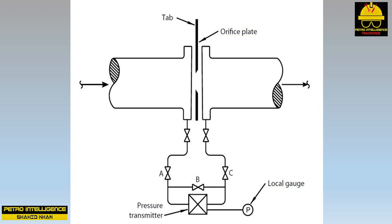Look at the tab sticking out of the orifice flanges. If the orifice plate is installed in the correct direction, there will be a number stamped onto the tab toward the flow — this is the orifice plate hole diameter. For example, if you see 0.374 stamped on the tab, the orifice hole diameter should be 0.374 inch.